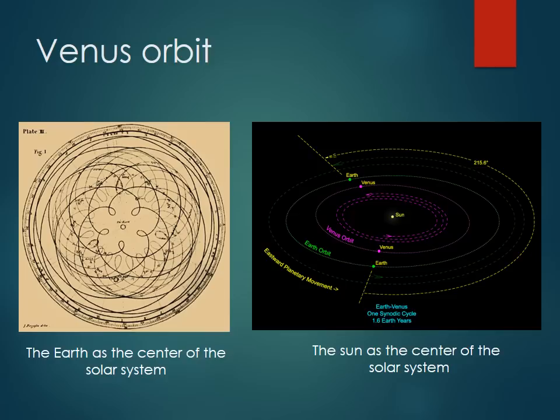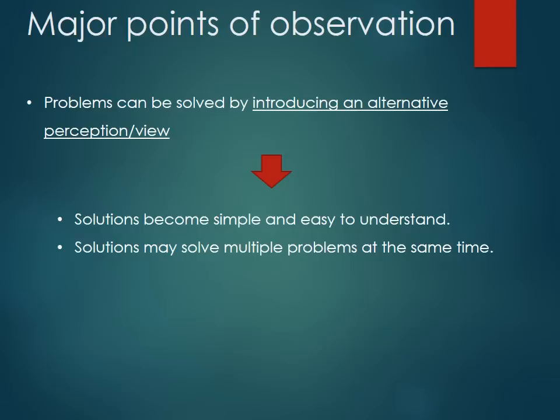By just shifting the perception — assuming that the Earth is no longer the center of rotation of the other objects and using the Sun instead — everything became simplified. All those theories of planetary orbits in the solar system could be applied not only for Venus, but for other planets as well. The major point is that the problem can be solved by introducing an alternative perception, not by sustaining or reinforcing the same one. The solution becomes simple and easy to understand by common people, and can solve multiple problems at the same time.